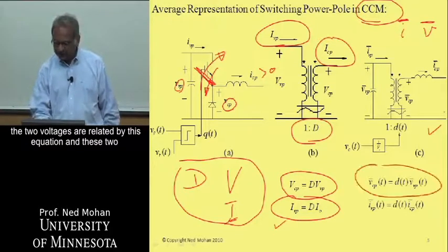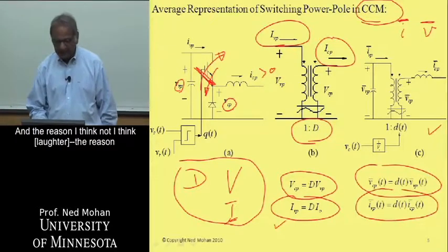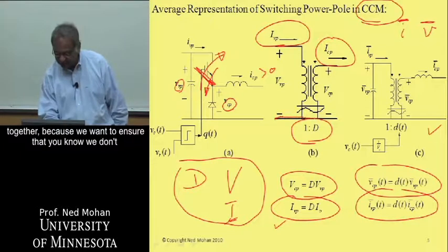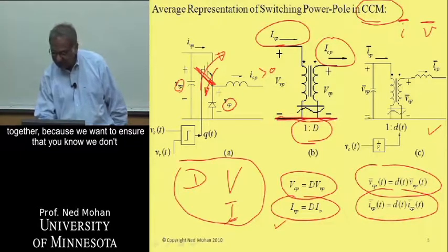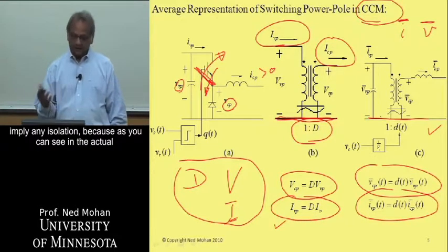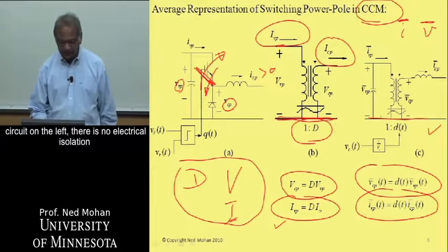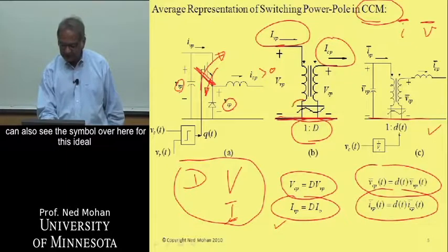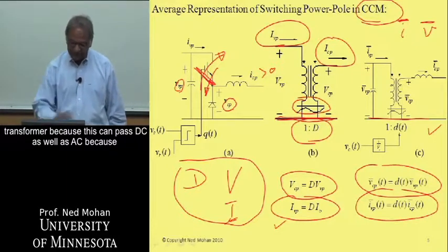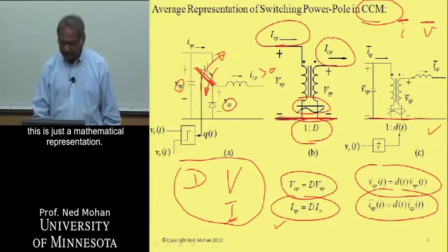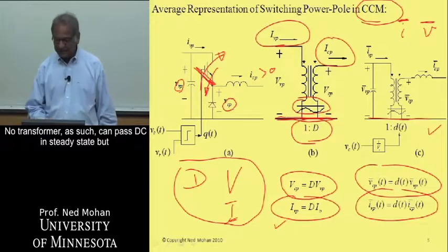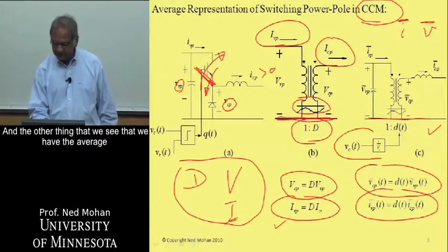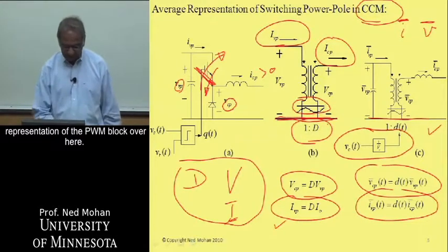The two voltages are related by one equation and the two currents by another. The bottom parts of the transformer are connected together to ensure we don't imply any isolation, because in the actual circuit there is no electrical isolation between input and output. This ideal transformer symbol can pass DC as well as AC, because it is just a mathematical representation — no real transformer passes DC in steady state. We also see the average representation of the PWM block.